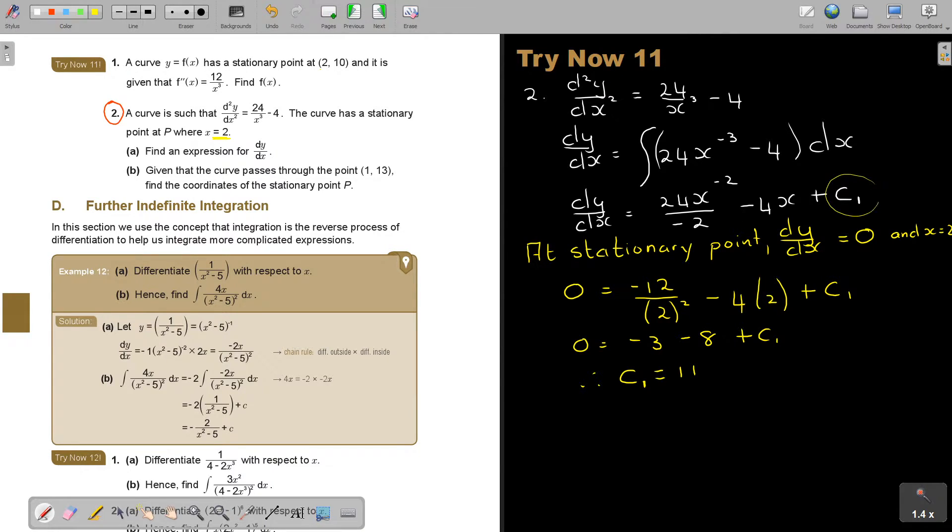Now I have to substitute it back in there. So dy over dx equals negative 12 over x squared minus 4x plus 11. I think it's better if it's written this way because then I can go into integration easier.